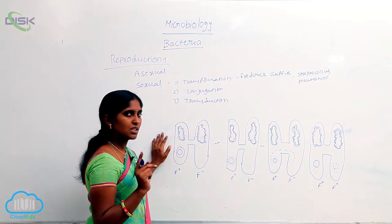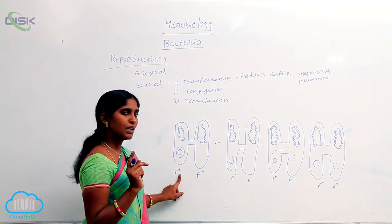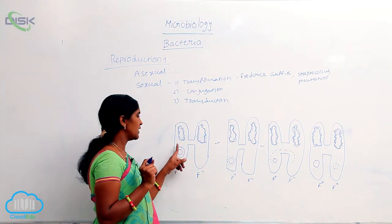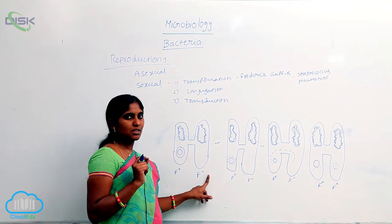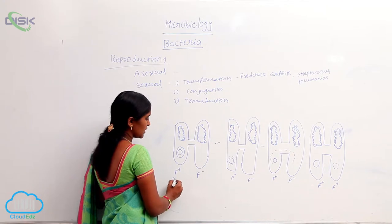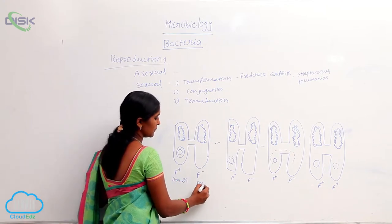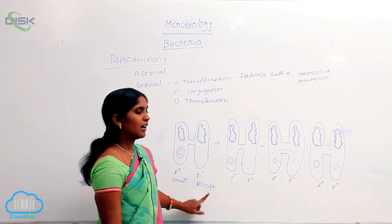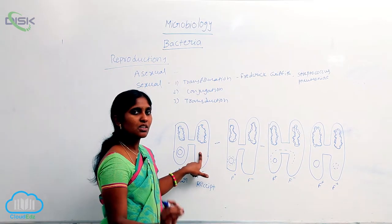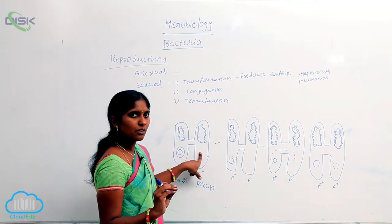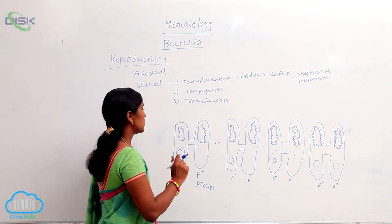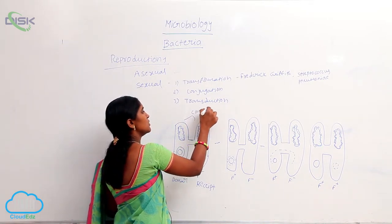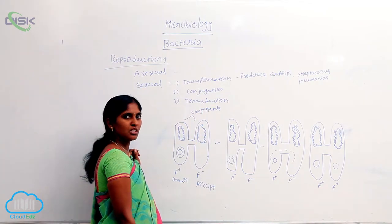You are seeing here two types of strains. One is F-plus and another one is F-minus. F-plus indicates the fertile factor — it consists of the fertile plasmid, so it is the donor cell. F-minus is the recipient, ready to receive. Between these two, the conjugation procedure takes place, and the two cells are called conjugants.